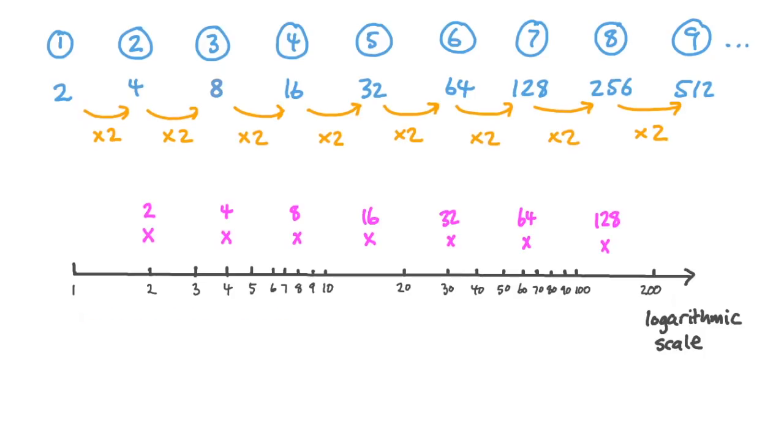So if we plot our powers of two on the scale, two, four, eight, sixteen, and so on, notice how the steps between subsequent numbers, two to four, four to eight, eight to sixteen, are equally spaced, and that's because of this logarithmic scale.